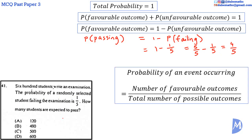Now we know that the probability of an event occurring is equal to the number of favorable outcomes over the total number of possible outcomes. Therefore, the probability of passing the exam is equal to the number of students expected to pass over the total number of students.